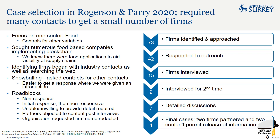Let's look at case selection from one of my papers with Mike Rogerson in 2020. This was a multiple case study in one sector — we focused on food, which controls for some of the other variables. Numerous food-based companies were sought who were looking at implementing blockchain and new technology. We identified firms by looking on the web, particularly LinkedIn, and then asked firms for contacts in other firms since it's easier to get a response with an introduction. Some roadblocks faced: non-response, initial response then non-response, unable or unwilling to provide the detail required, partners objecting to content, and organisations requesting their firm name was redacted.